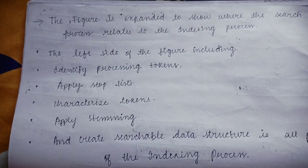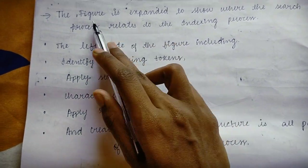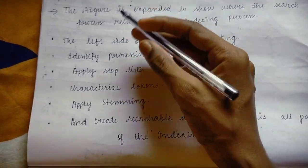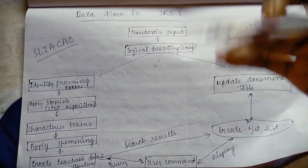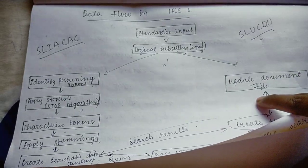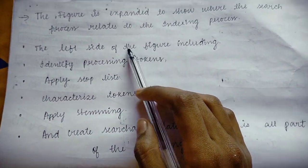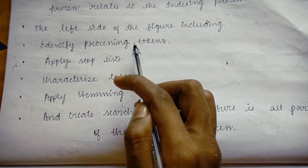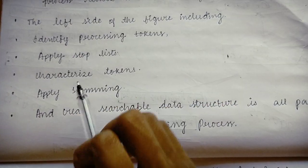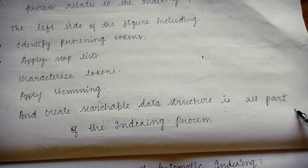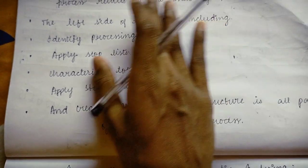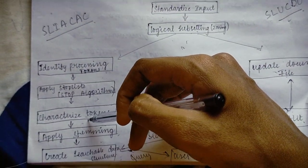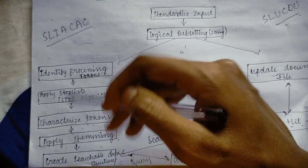The figure is expanded to show where the search process relates to the indexing process. The left side of the figure — including identify processing tokens, apply stop list, characterize tokens, apply stemming, and create searchable data structure — is all part of the indexing process. All these left-side parts of the flowchart belong to the indexing process.